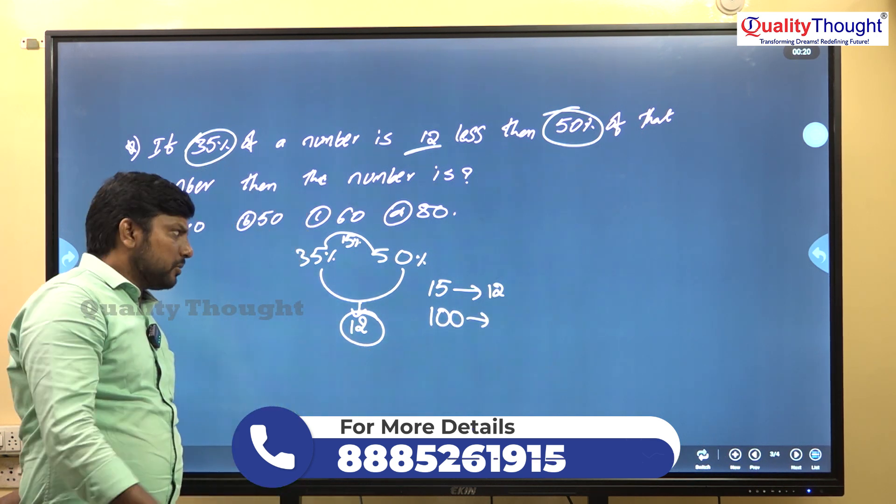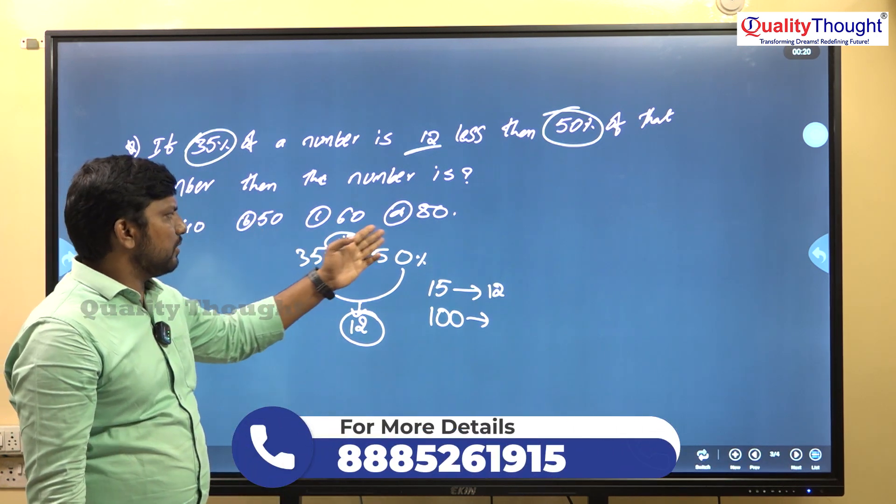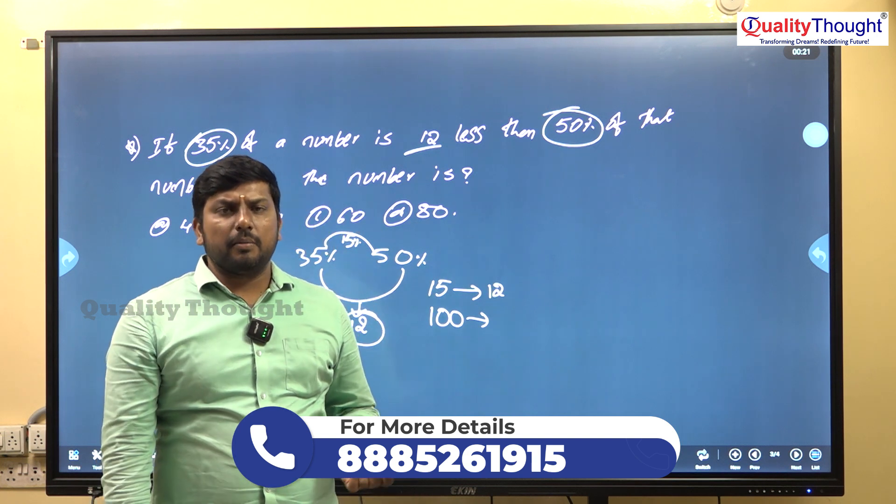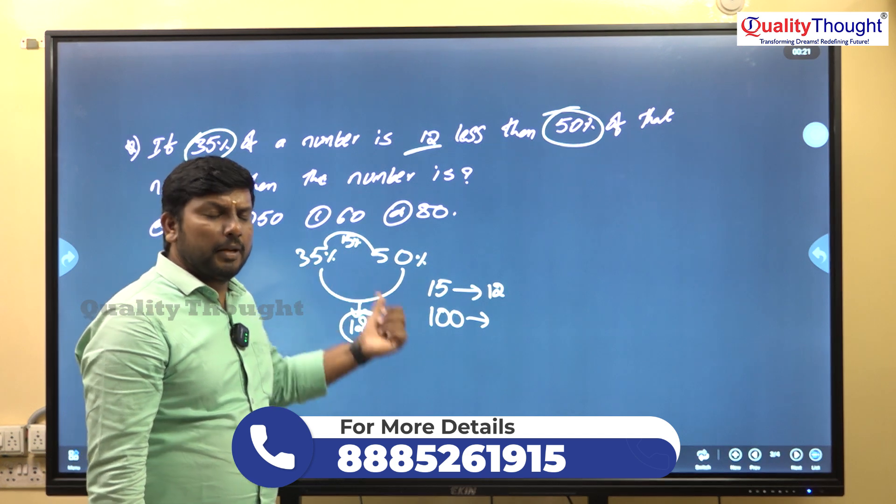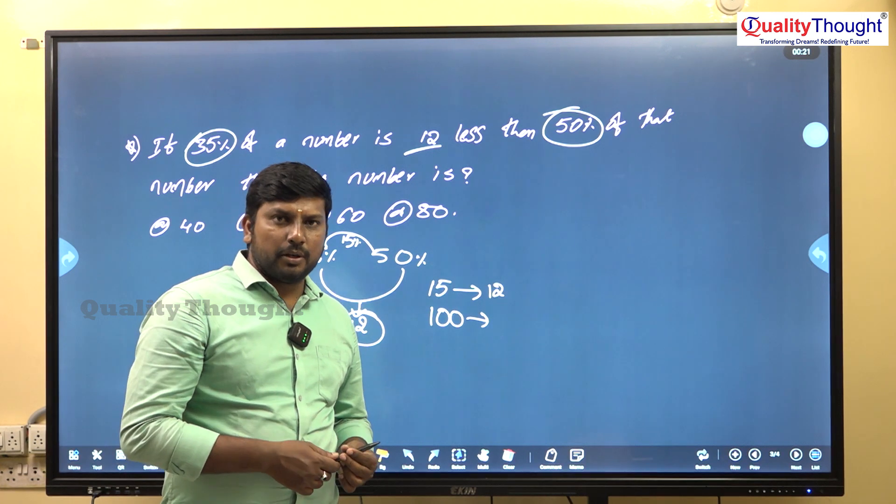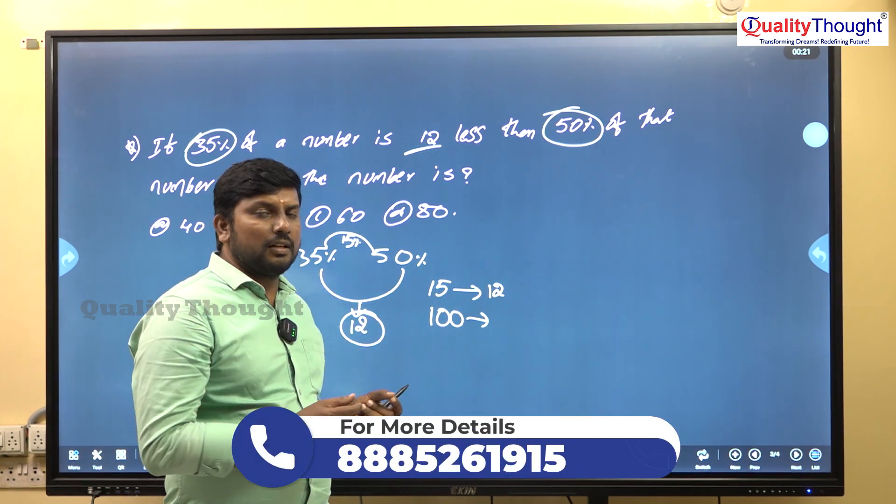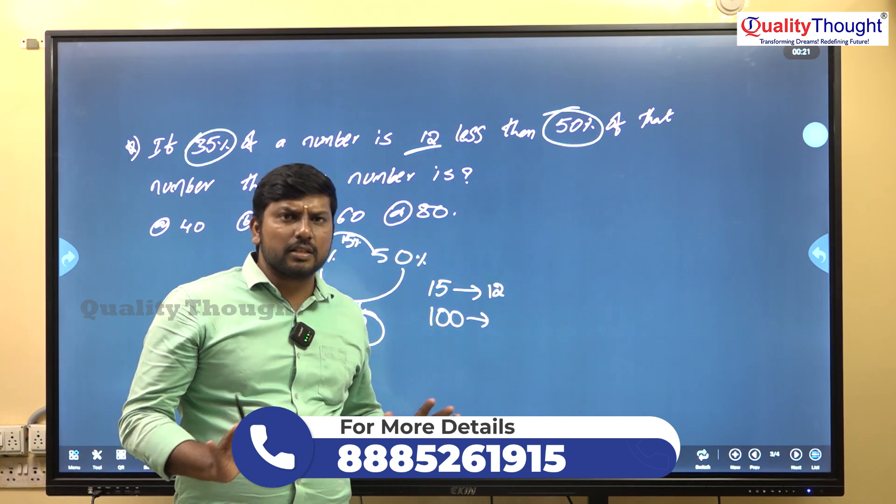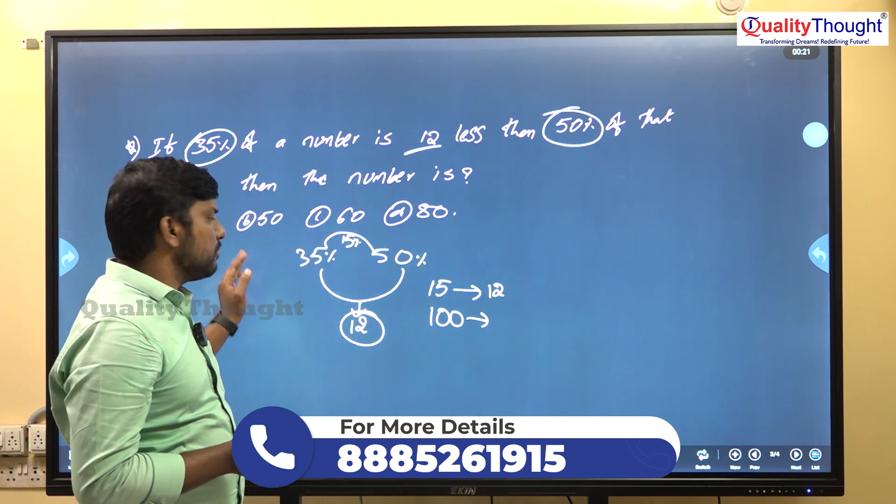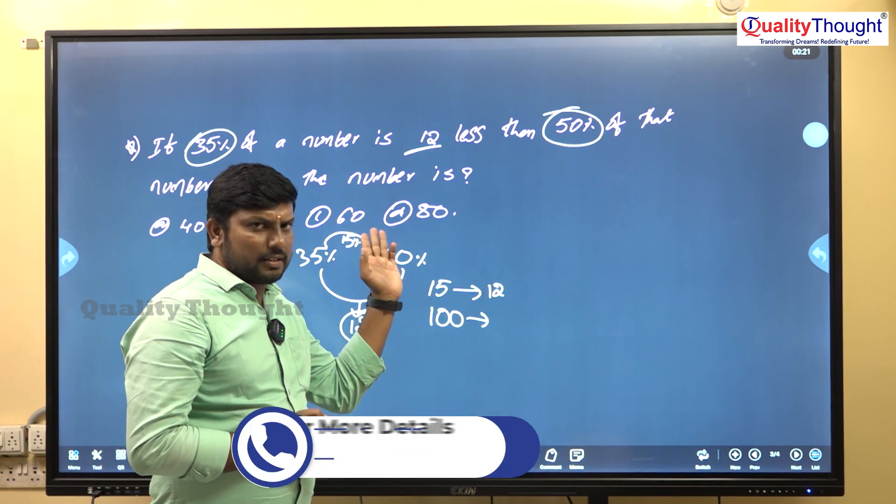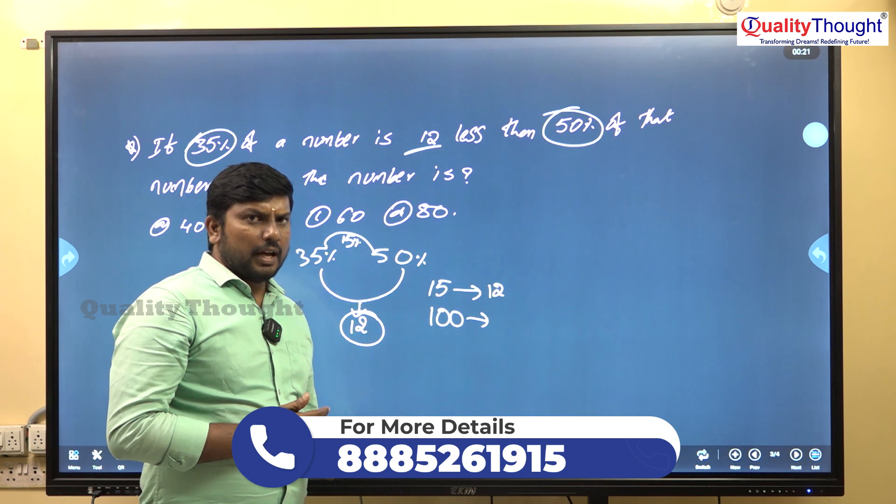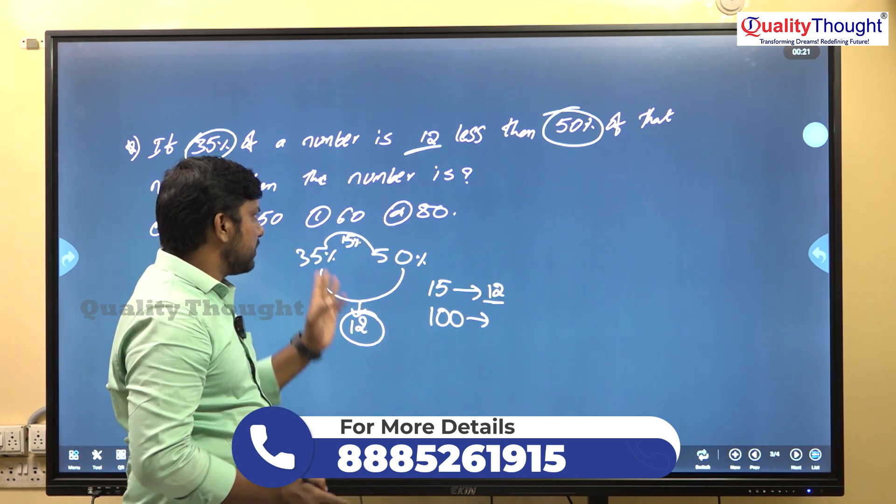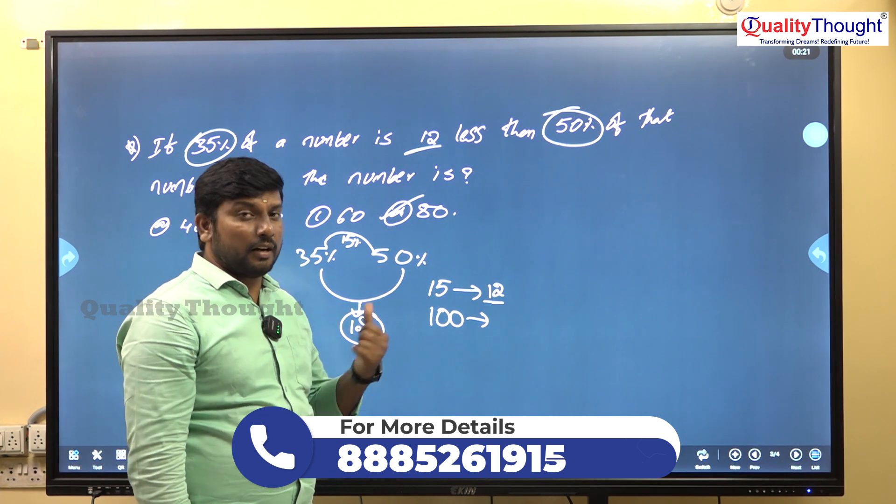Instead of cross-multiplying, I'll use assumptions. Options are 40, 50, 60, 80. Give importance to round figure numbers. If all are round figures, then prefer the second highest number. So let's calculate with 60 rupees. 10 percent is 6 rupees and 5 percent is 3 rupees, so 15 percent is 9 rupees. But we need 12 rupees.